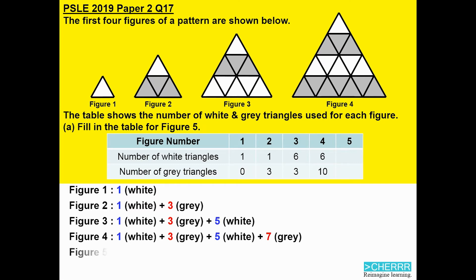So, for figure 5, we will have 1 plus 3 plus 5 plus 7 plus 9. And 9 being the last one will be white. So, all I need to do to find the total number of white triangles, I just need to add 1 plus 5 plus 9. That will get me 15. For grey, I only need to add 3 plus 7. I will have 10.